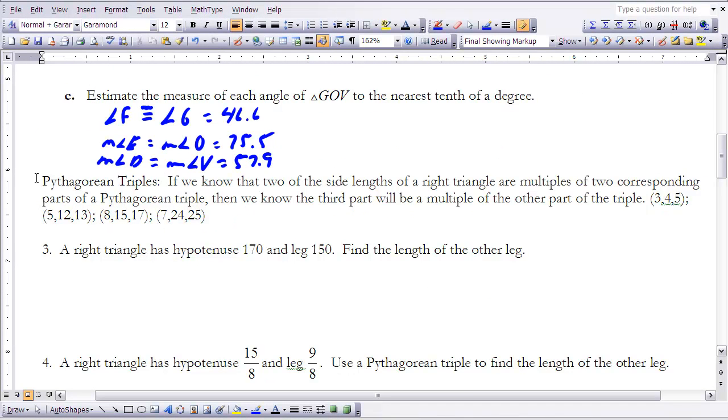All right, the next couple examples are going to deal with Pythagorean triples. And just a reminder what Pythagorean triples are. When we talk about Pythagorean triple, we're saying that it's three integer values that can be side lengths for a right triangle. And I've listed for you below here some of the common ones or the most often used ones. So 3, 4, 5 is the most often.